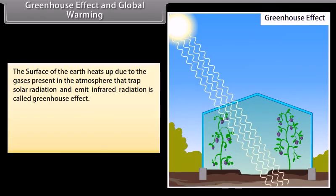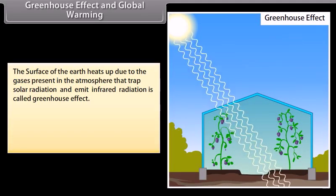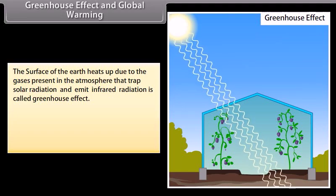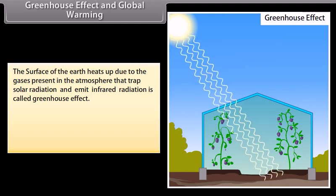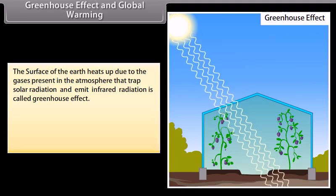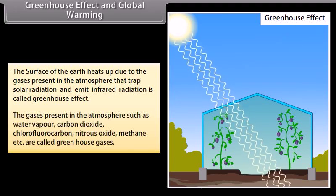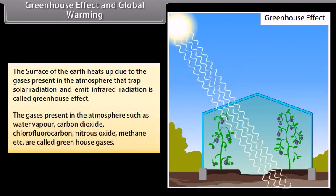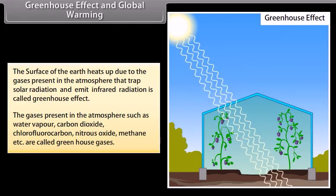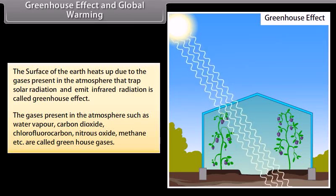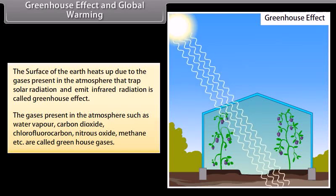Greenhouse Effect and Global Warming: the surface of the Earth heats up due to the gases present in the atmosphere that trap solar radiation and emit infrared radiation — this is called the greenhouse effect. Gases such as water vapor, carbon dioxide, chlorofluorocarbon, nitrous oxide, methane, etc. are called greenhouse gases.